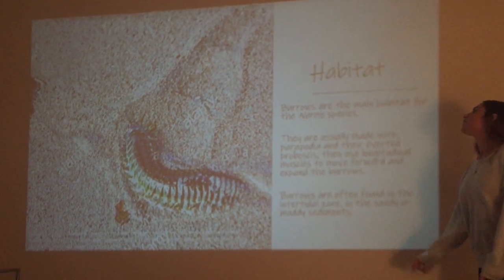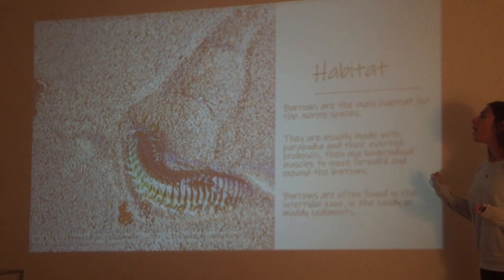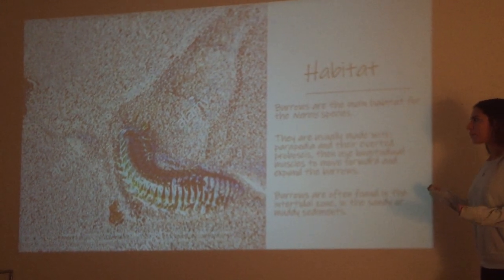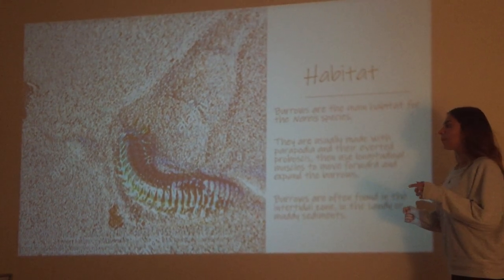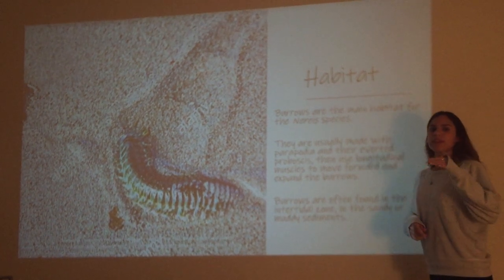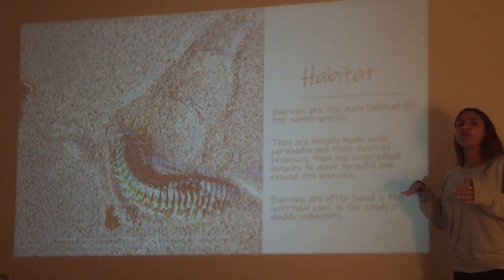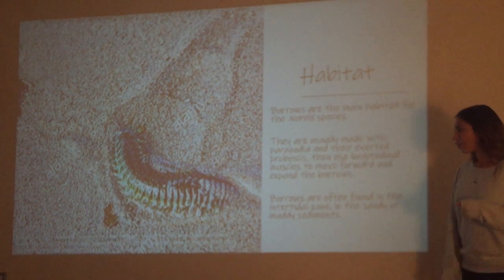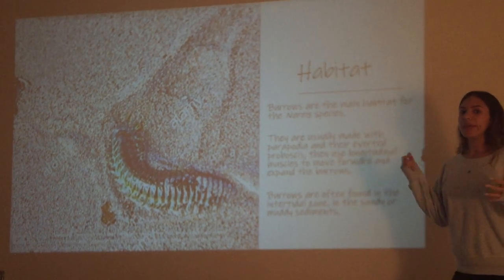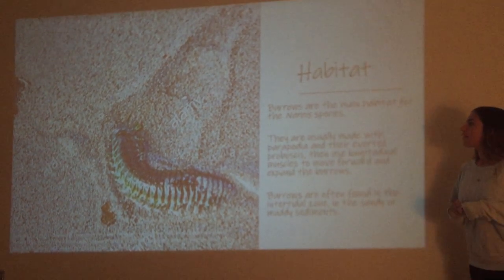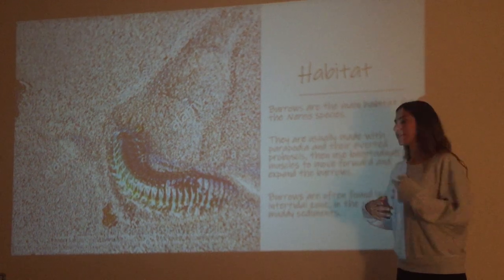As previously mentioned, these worms actually live in tubes underground or burrows, and these are mainly made with their parapodia, although sometimes they can use their everted proboscis to make them. Once they make the initial hole, they will use their longitudinal muscles to further move down into the sediment. These burrows are found around an intertidal zone, around mussels and barnacles, and the worms are usually found in sandy or muddy sediments, making it easier for them to burrow down.